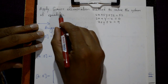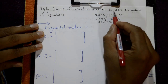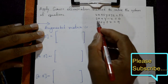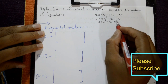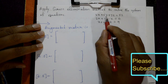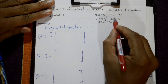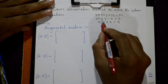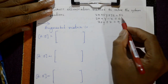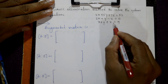Apply Gauss elimination method to solve the system of equations. The equations are: 2x plus 5y plus 7z is equal to 52, 2x plus y minus z equal to 0, and x plus y plus z is equal to 9.